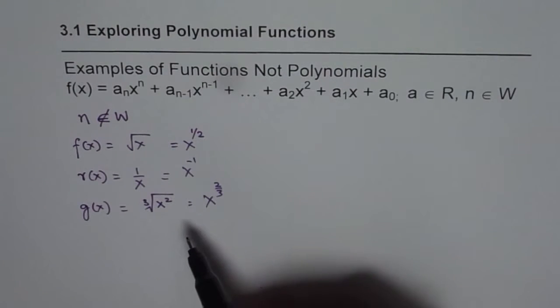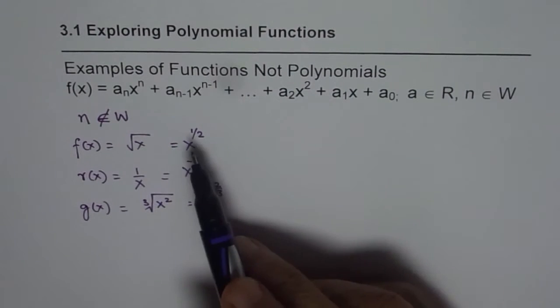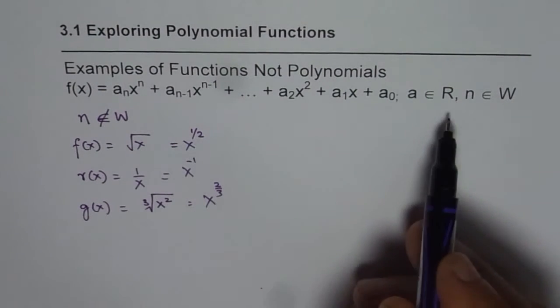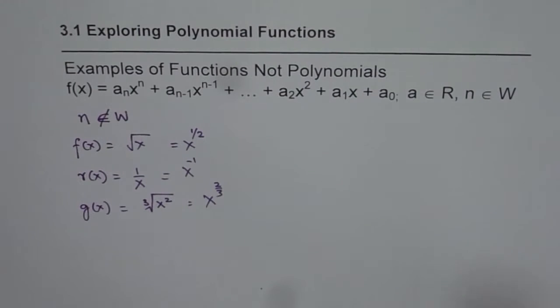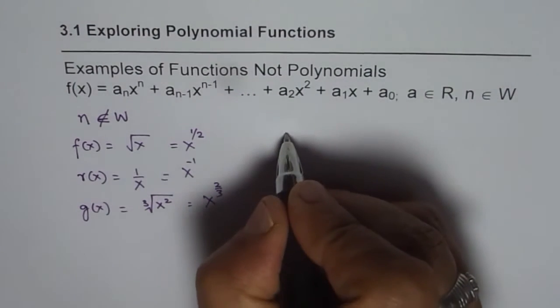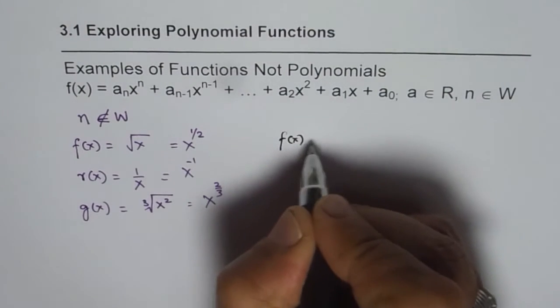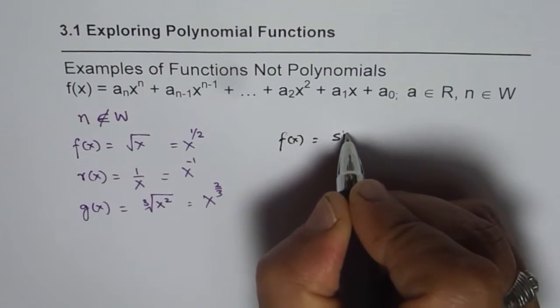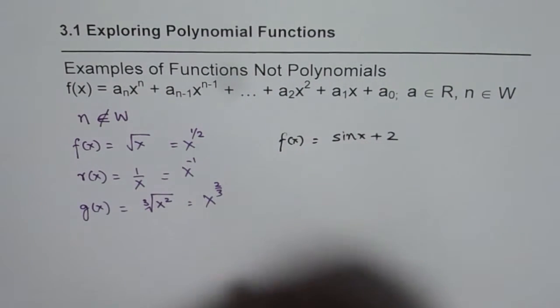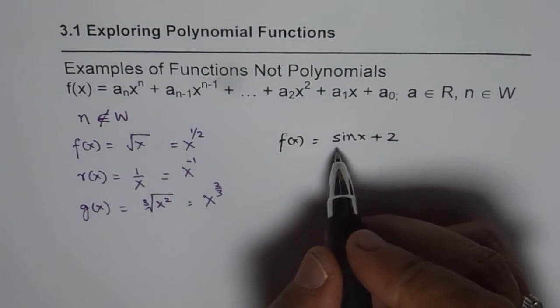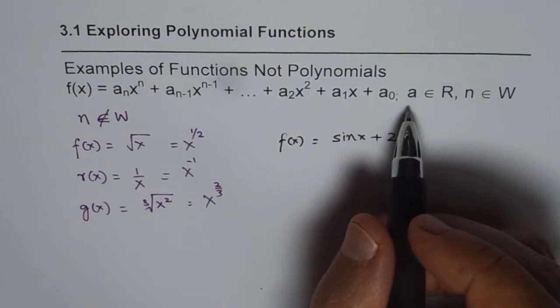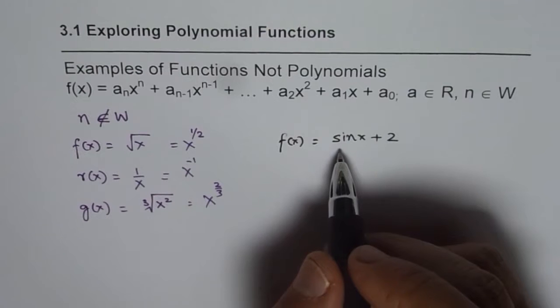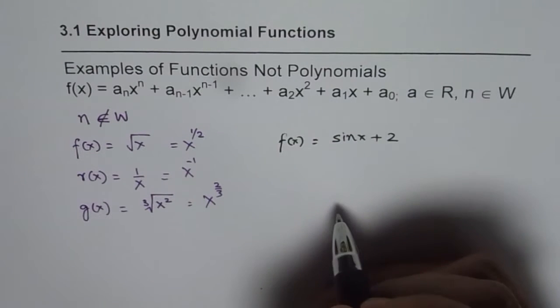Now we should take numbers where the coefficient is not a real number. It is something else. For example, I could write a function like f(x) equals to sin x plus 2. Now the sin x is not a real number. So that is not a polynomial.